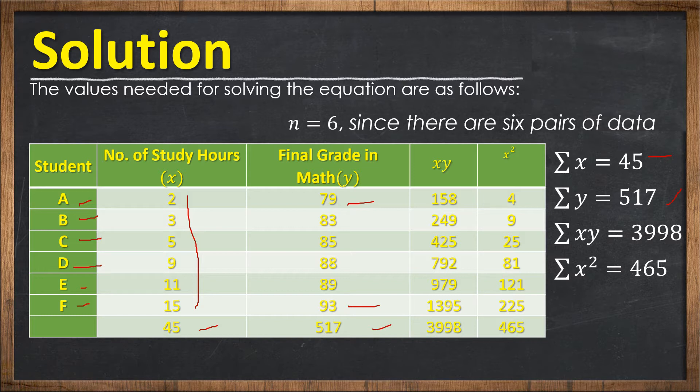If we multiply x and y: 2 times 79 equals 158, 3 times 83 equals 249, 5 times 85 equals 425, 9 times 88 equals 792, and so on, up to 15 times 93 equals 1395. Adding 158 up to 1395, the total is 3998, which is our summation of xy. For x squared: 2 times 2 equals 4, 3 squared equals 9, 5 squared equals 25, 9 squared equals 81, 11 squared equals 121, 15 squared equals 225. Adding from 4 to 225, the summation of x squared is 465.